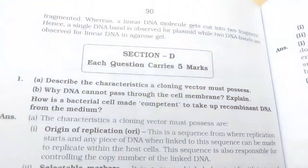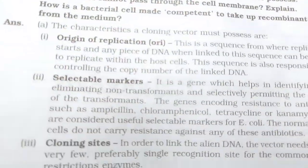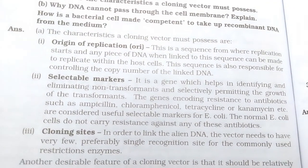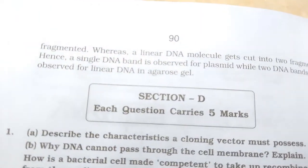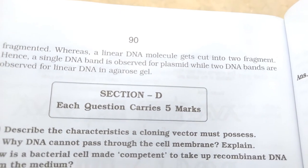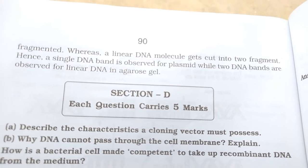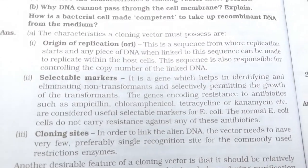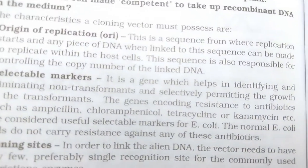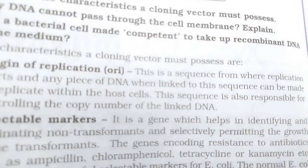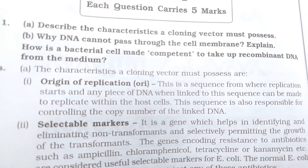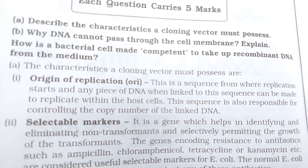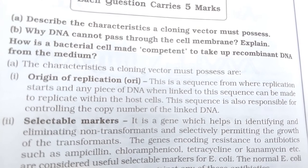Now we come to Section D, the five-marks questions. Describe the characteristics a cloning vector must possess and explain why DNA cannot pass through the cell membrane on its own.